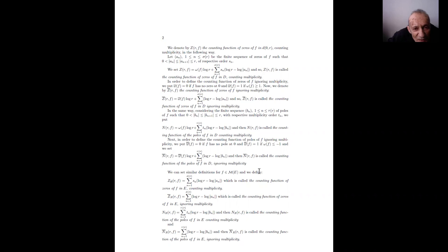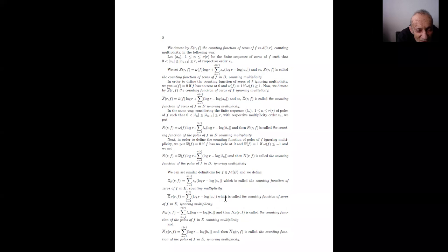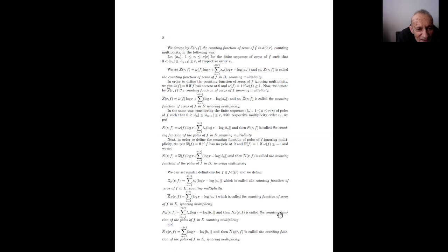In the same way, considering the sequence of poles, we define N(r, f) = ω(f)·log(r) + Σ_{n=1}^{τ(r)} t_n·(log(r) − log|b_n|), where τ(r) is the number of distinct poles in the disk of center zero and radius r, t_n is the multiplicity order of the poles, and b_n are the poles. This is the counting function of poles counting multiplicity.